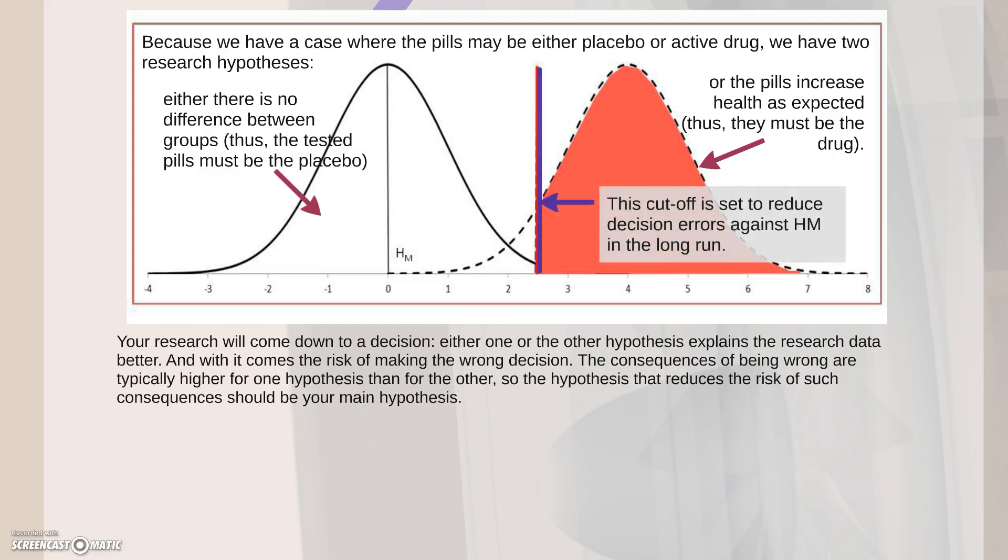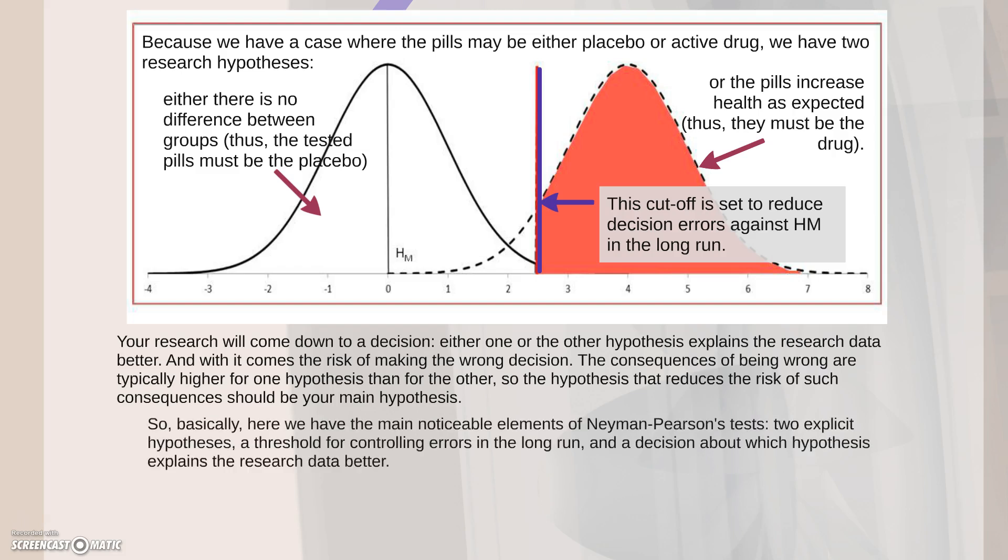This cutoff here is said to reduce decision errors against the main hypothesis in the long run. So basically, what we have here are the main elements of Neyman-Pearson's test: two explicit hypotheses, a threshold for controlling errors in the long run, and a decision about which hypothesis explains the research data better.